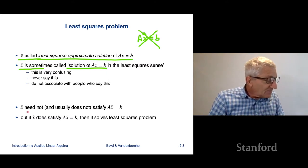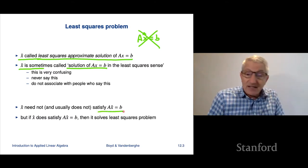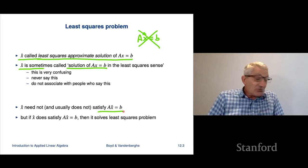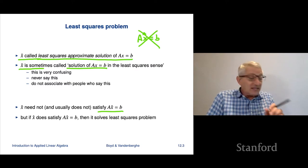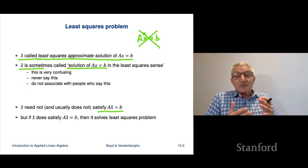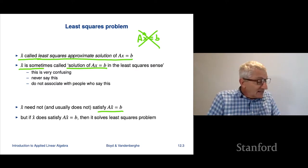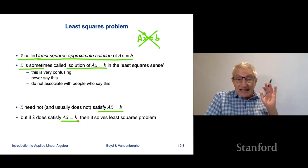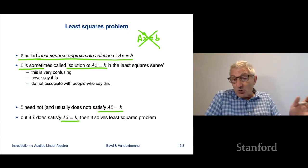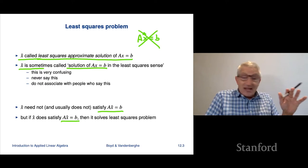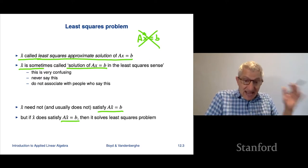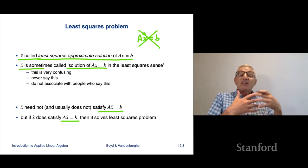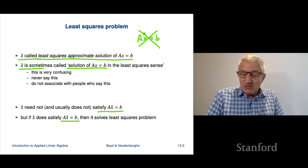X-hat, the solution of the least squares problem, generally doesn't satisfy Ax-hat equals B — it merely minimizes the norm of the residual. However, if you have an x-hat that does satisfy Ax equals B, then it is guaranteed to be the solution, because the norm squared of 0 is 0 and norm squareds don't come any smaller than 0. So least squares generalizes the idea of an actual solution.